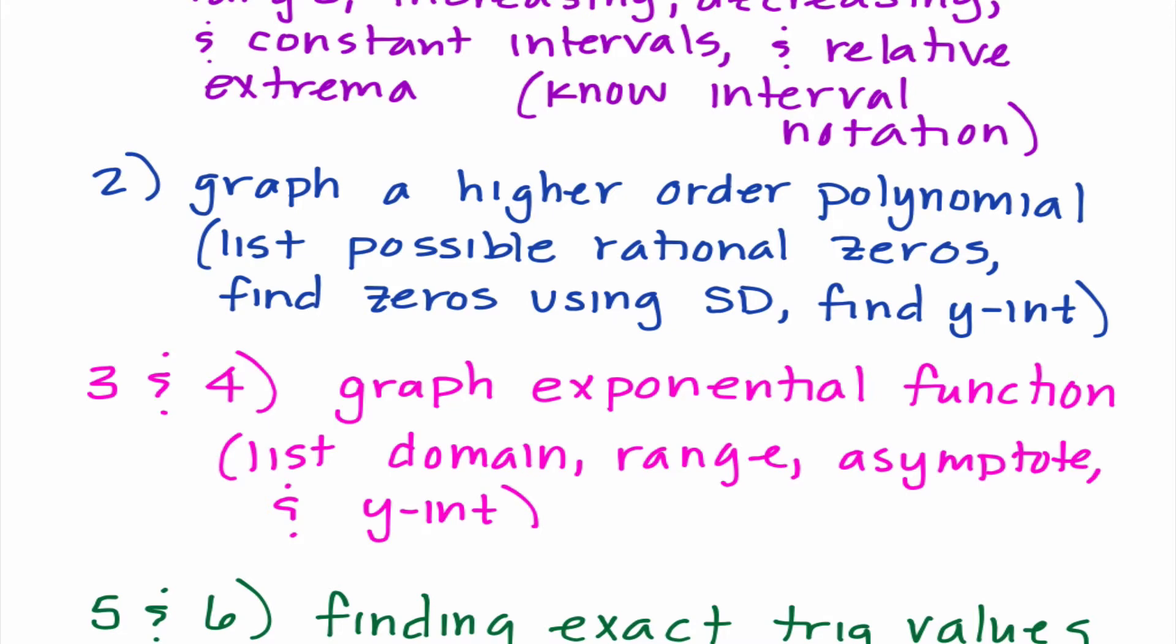Numbers three and four, these are both from the chapter three test. It deals with graphing exponential functions. I'll give you an x-y chart, you can use it if you want, you don't need to. So I'm looking at your graph, and then I'm also asking you to list the domain, the range, the equation of the asymptote, and whatever the y-intercept is. If you think back to that chapter, we actually had like a whole section of the test that that's all we did.